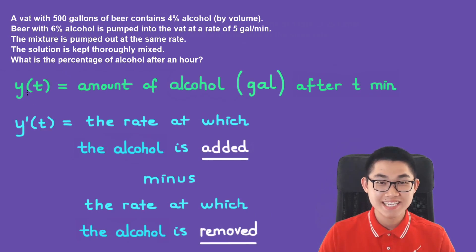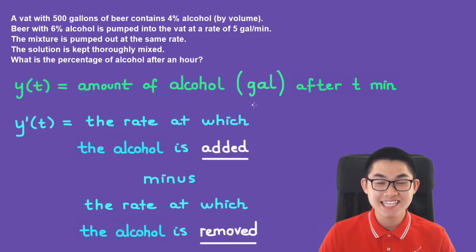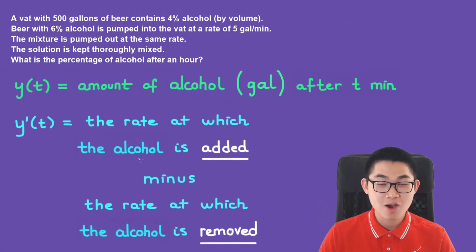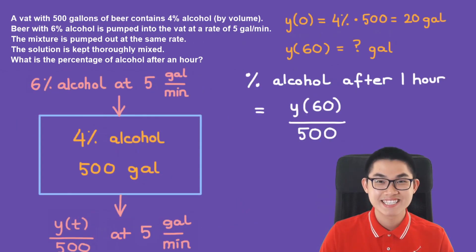Let y(t) equal the amount of alcohol in gallons after t minutes. And y'(t), or the derivative, is the rate at which the alcohol is added minus the rate at which it is removed. Don't forget to draw a diagram.